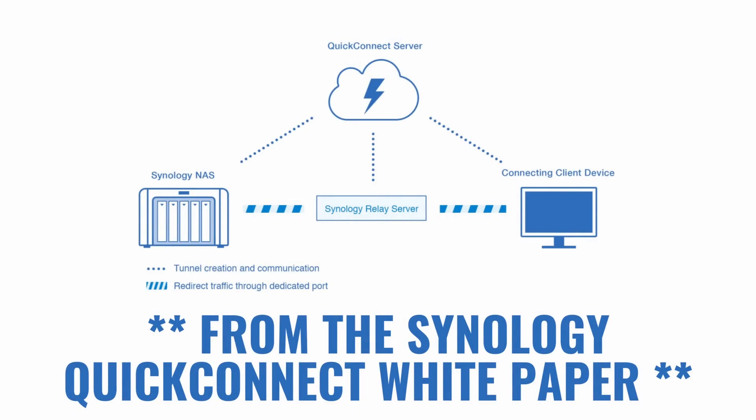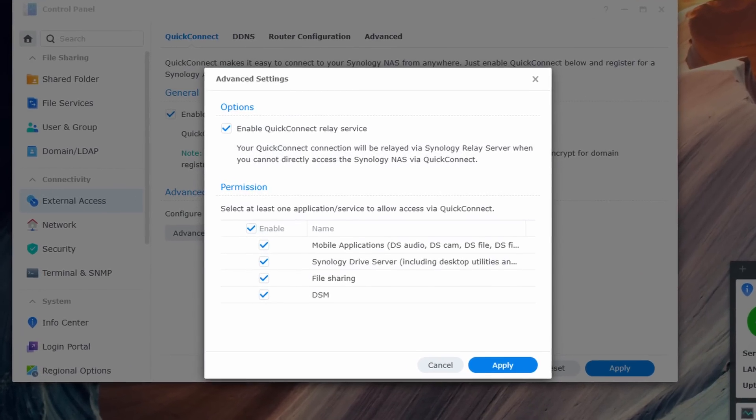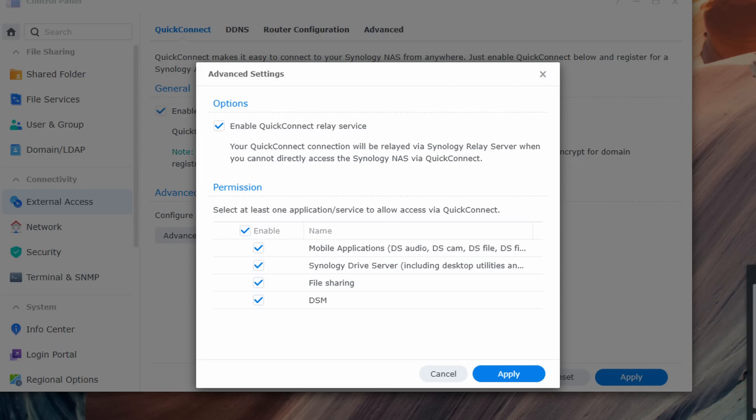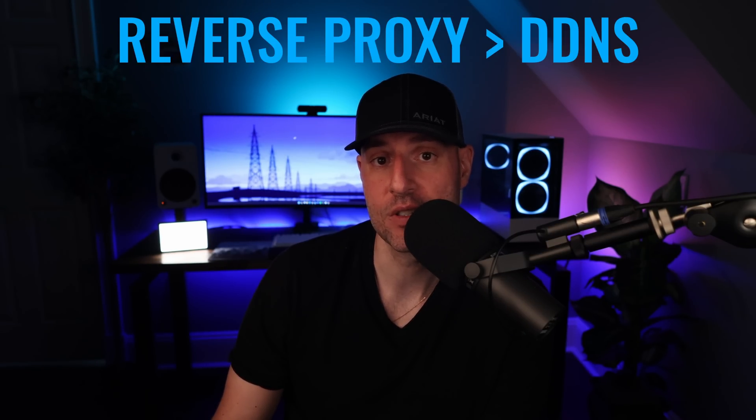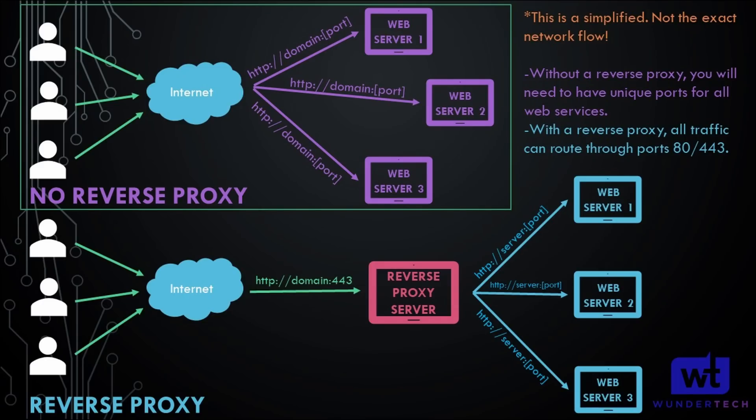When looking at pure ease of use, QuickConnect is by far the easiest way to access a Synology NAS remotely. Performance can be limited and you don't control anything, but if you edit the permissions for QuickConnect it can make a lot of sense in certain scenarios. Next would be DDNS and a reverse proxy. If you want to use DDNS, I'd suggest using a reverse proxy instead. In very specific scenarios DDNS can make sense, but a reverse proxy does everything DDNS does with the benefit of requiring the domain name to access the service. Plus, if the only thing holding you back is the domain name, you can get a free DDNS hostname from Synology and use subdomains with the reverse proxy server.